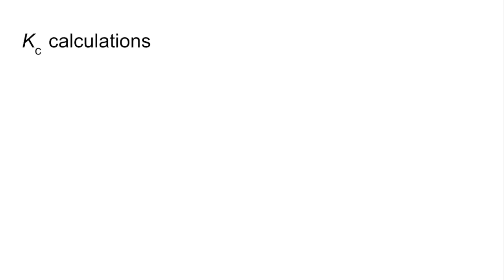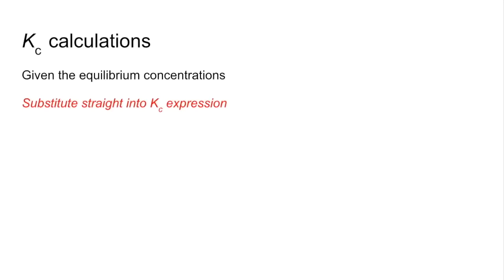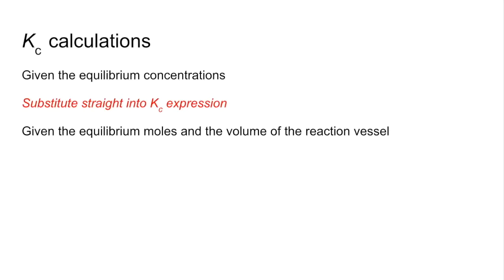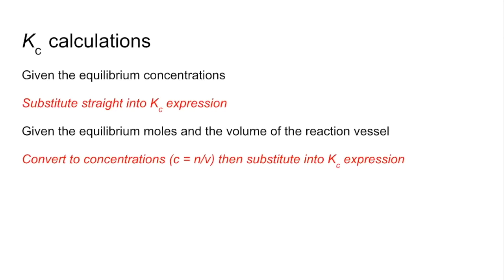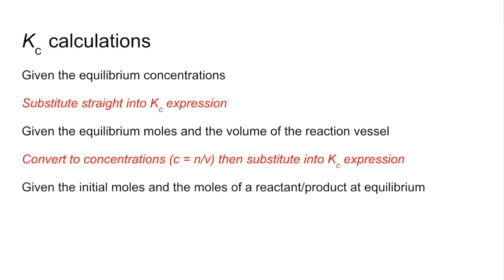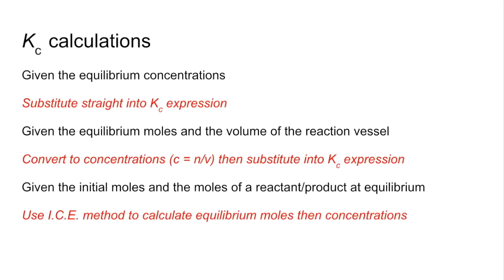Now we'll look at some Kc calculations. If you're given the equilibrium concentrations directly, simply substitute the values into the Kc expression. If given equilibrium moles and the volume of the reaction vessel, convert moles to concentrations using concentration equals moles over volume, then substitute. If given initial moles and moles of a reactant or product at equilibrium, use the ICE method to calculate equilibrium moles, then convert to concentrations using the vessel volume.